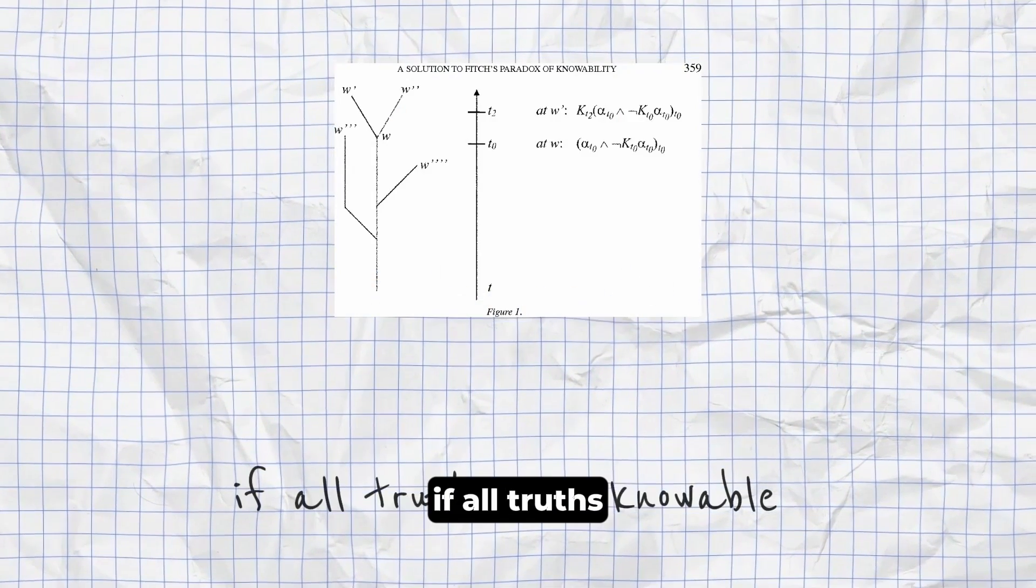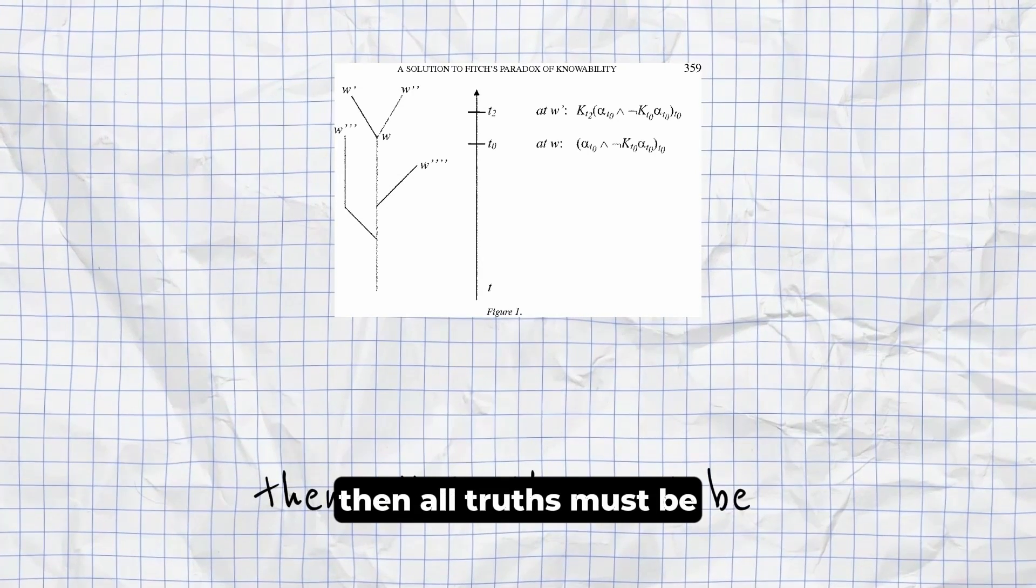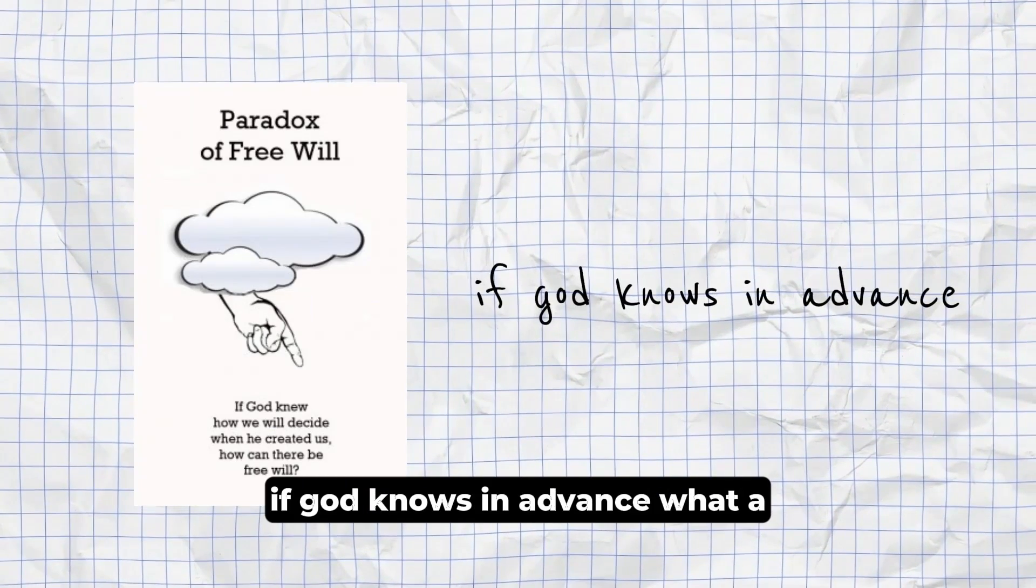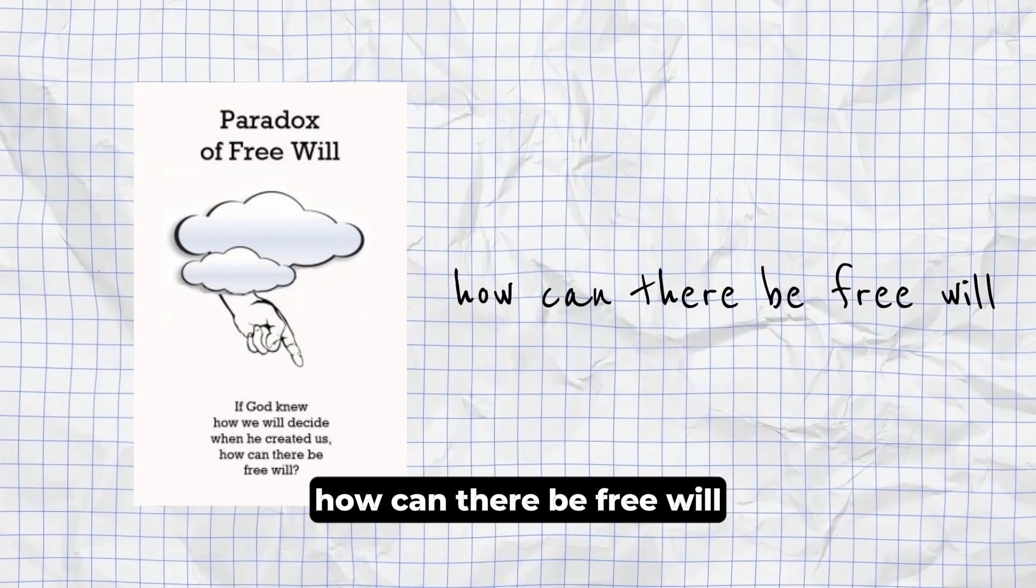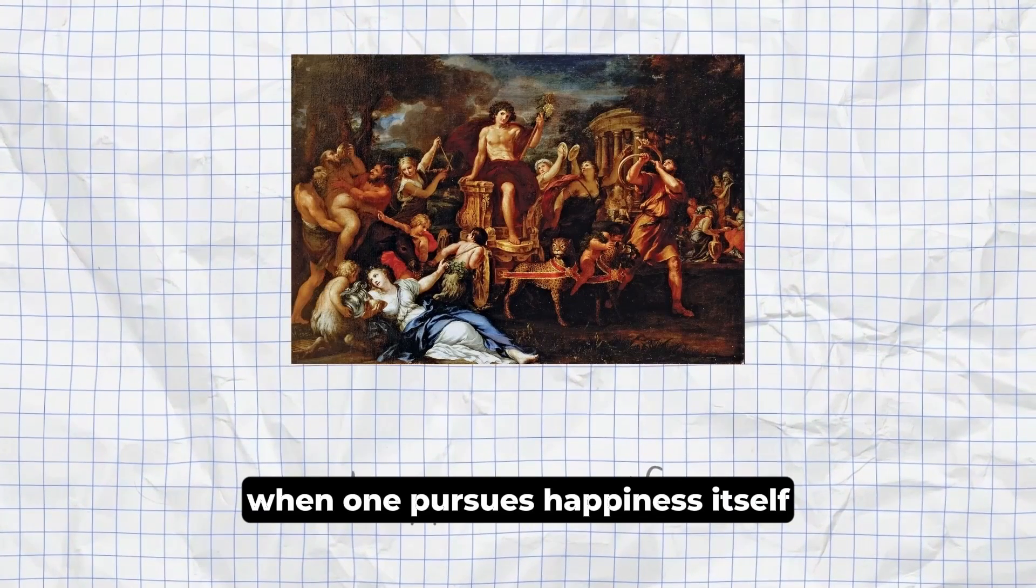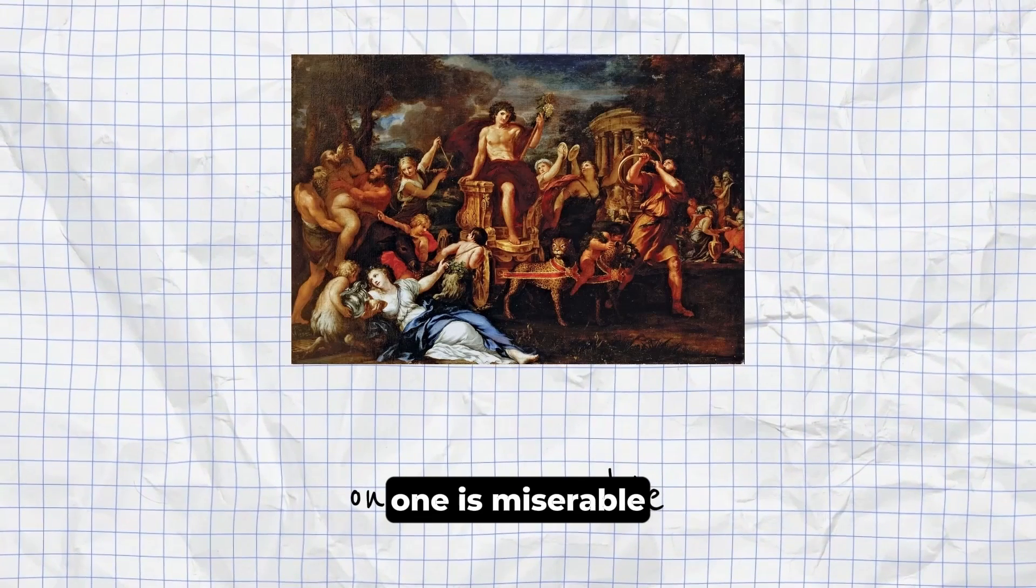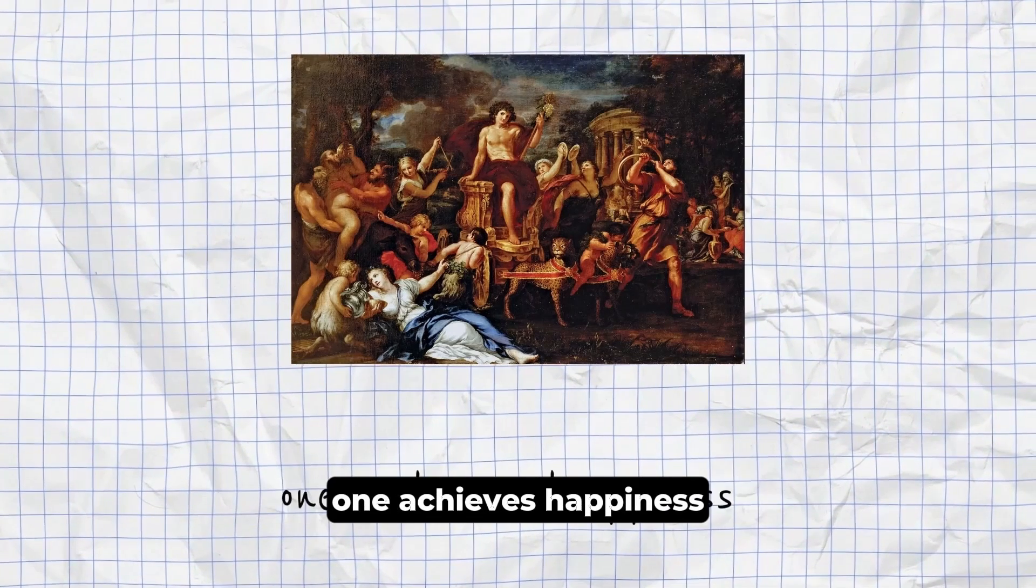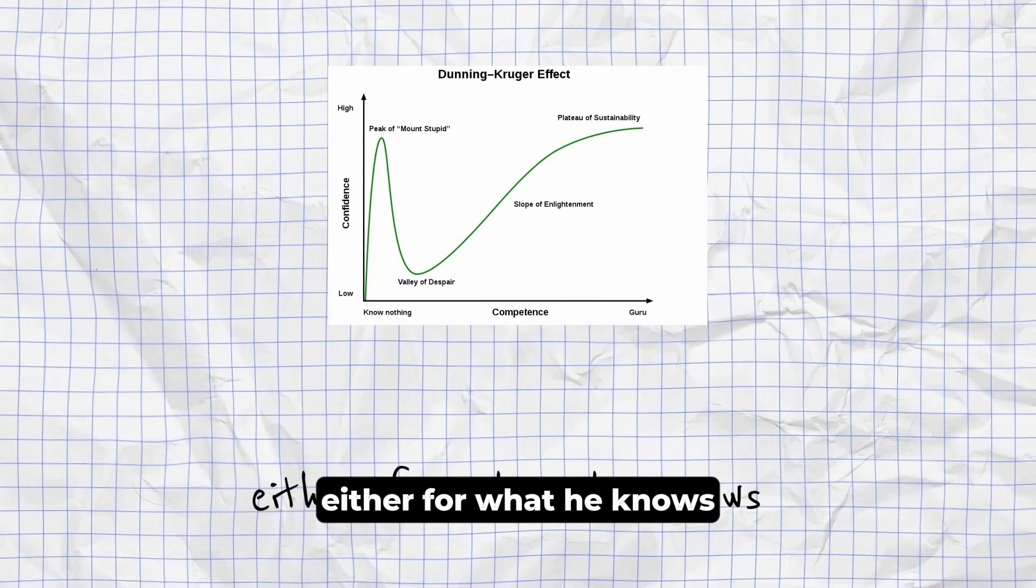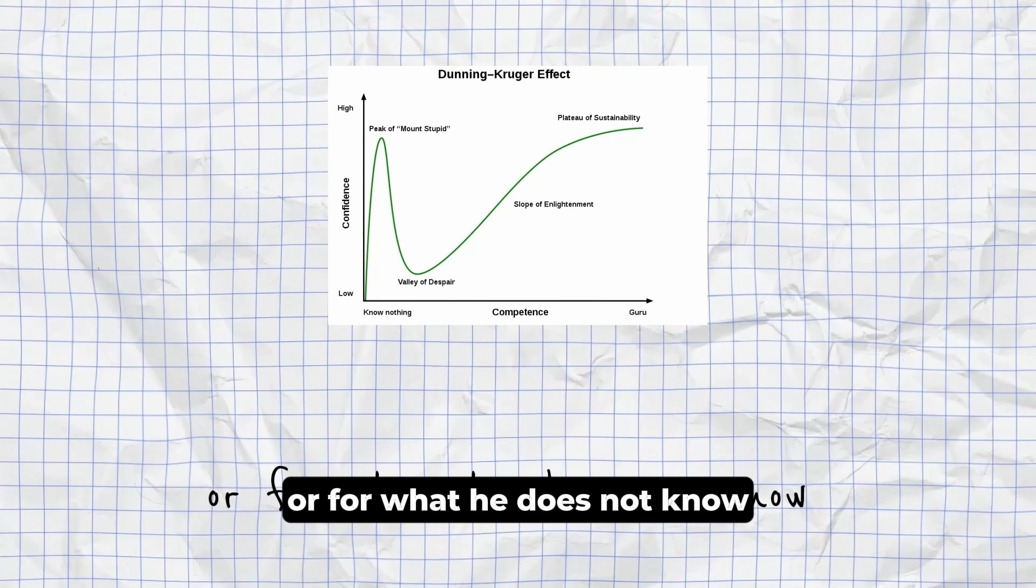Fitch's Paradox. If all truths are knowable, then all truths must in fact be known. Paradox of Free Will. If God knows in advance what a person will decide, how can there be free will? Paradox of Hedonism. When one pursues happiness itself, one is miserable, but when one pursues something else, one achieves happiness. Learner's Paradox. A man cannot search either for what he knows or for what he does not know.